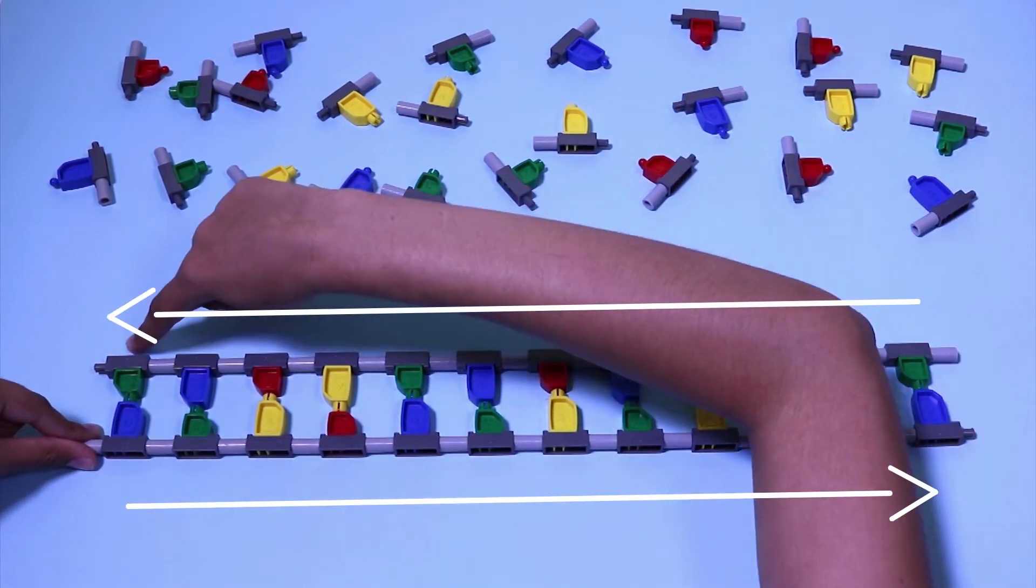The bottom strand should have the arrows pointing to the right. The top strand should have the arrows pointing to the left.